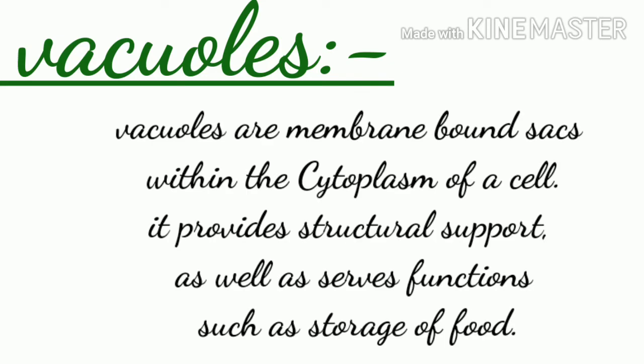The next cell organelle is vacuoles. Vacuoles are membrane-bound structures within the cytoplasm of a cell, and their main function is food storage. In mature plant cells, vacuoles are large and occupy most of the cell volume, providing structural support to the plant cells.